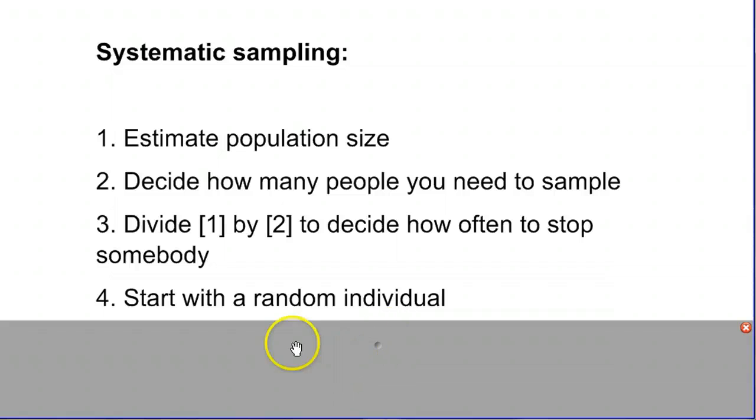And then finally, we can't just say we're starting with the first person that walks in the door and then choosing every tenth person that comes by. We need to pick a random individual, because if we always start with the first person, that's going to affect our results. That's not truly random.